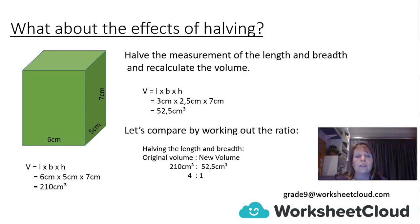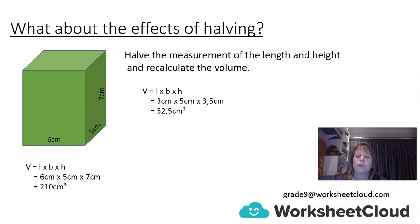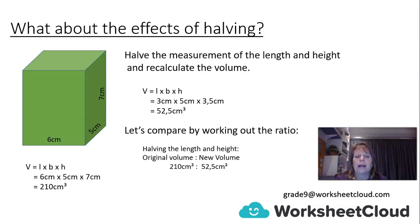Let's check with two different sides — halving the length and the height. The length 6 becomes 3 and the height 7 becomes 3.5. So it's 3 times 5 times 3.5, giving us 52.5 cm cubed. The ratio: 210 cm cubed to 52.5 cm cubed is 4 to 1 — again a quarter of the original volume.